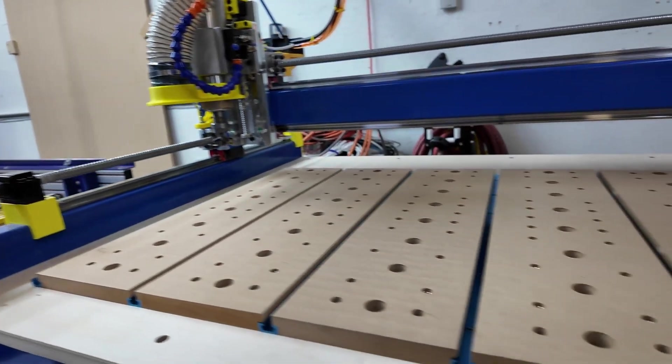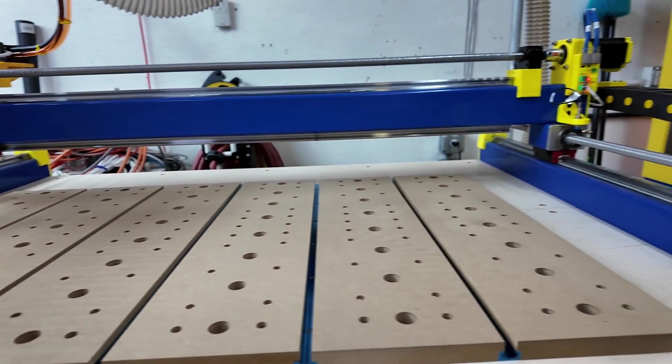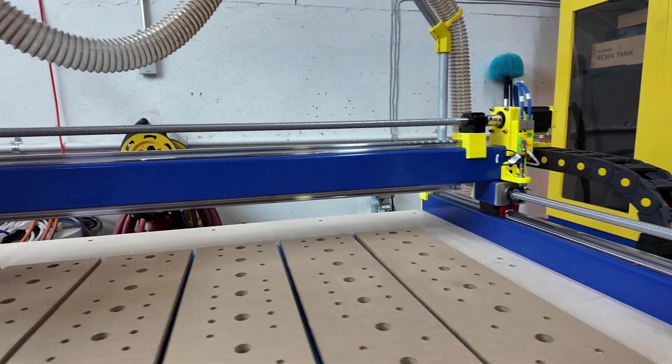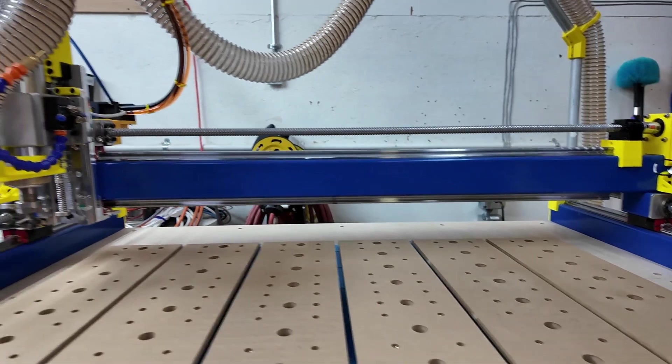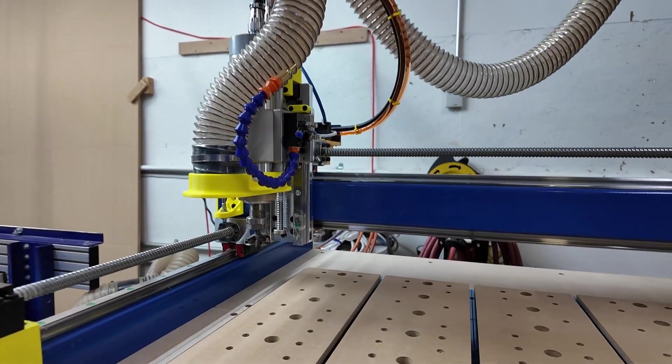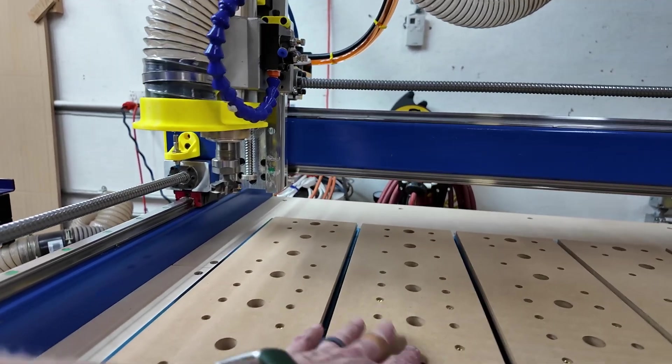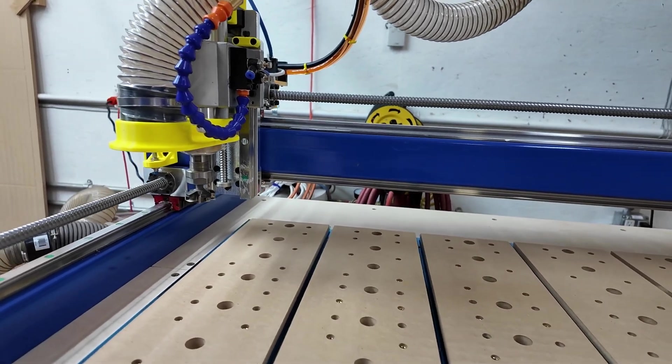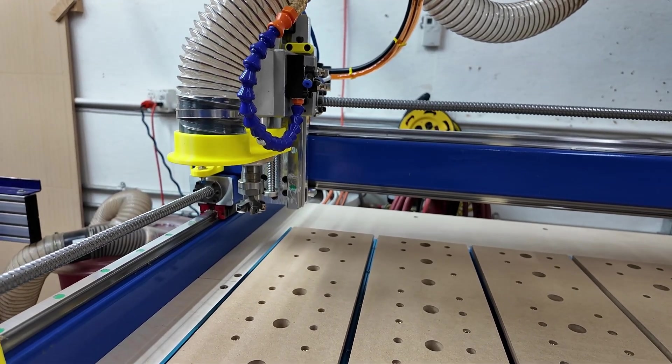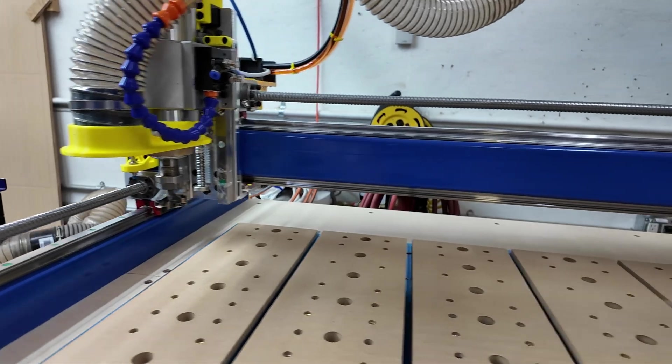So there we go. That is a completely surfaced spoil board. And the spindle is completely trammed in. You probably saw during the video I was fiddling around with it and touching it. What I was doing was looking to see how accurate my tramming job was.